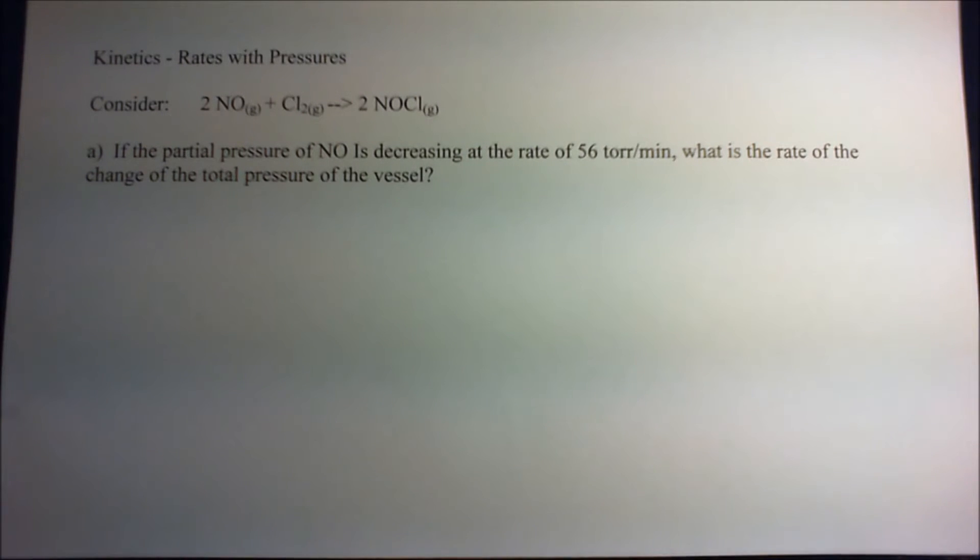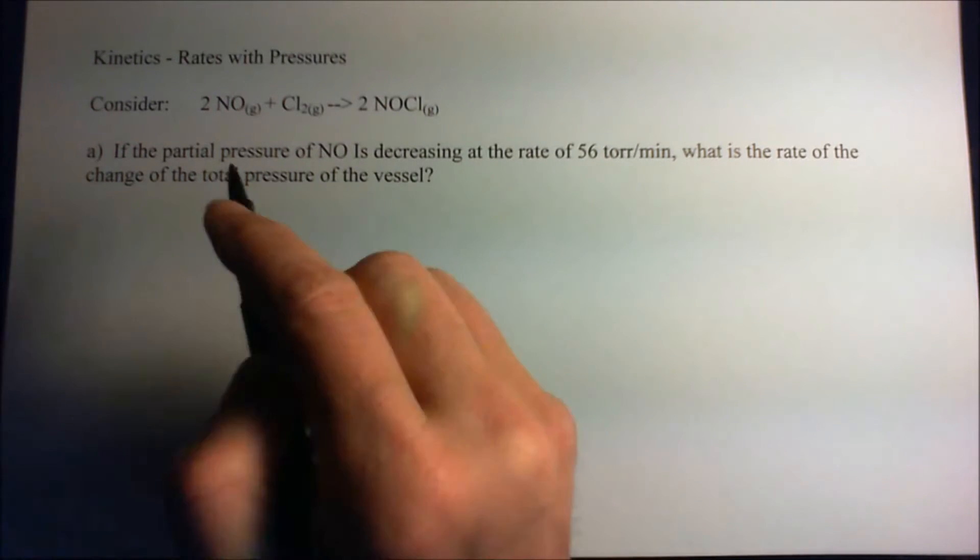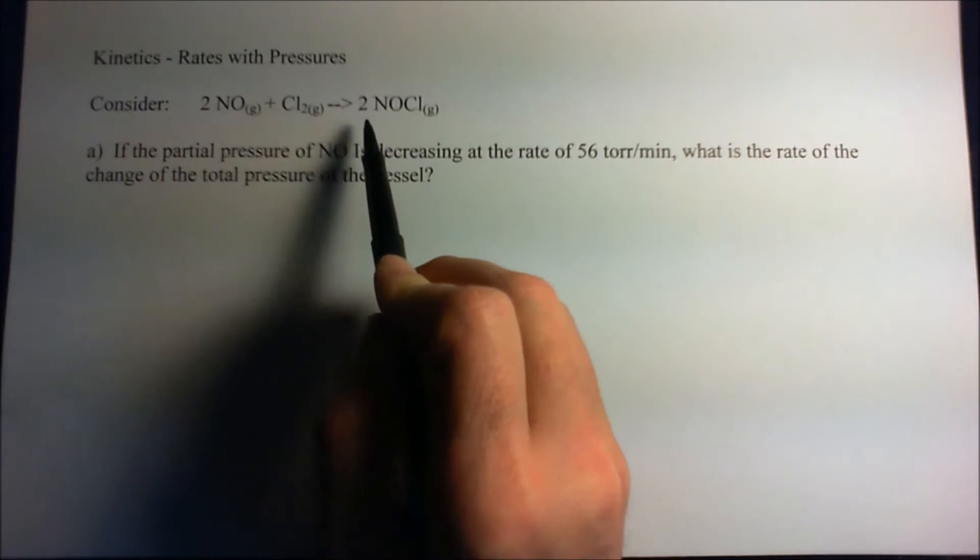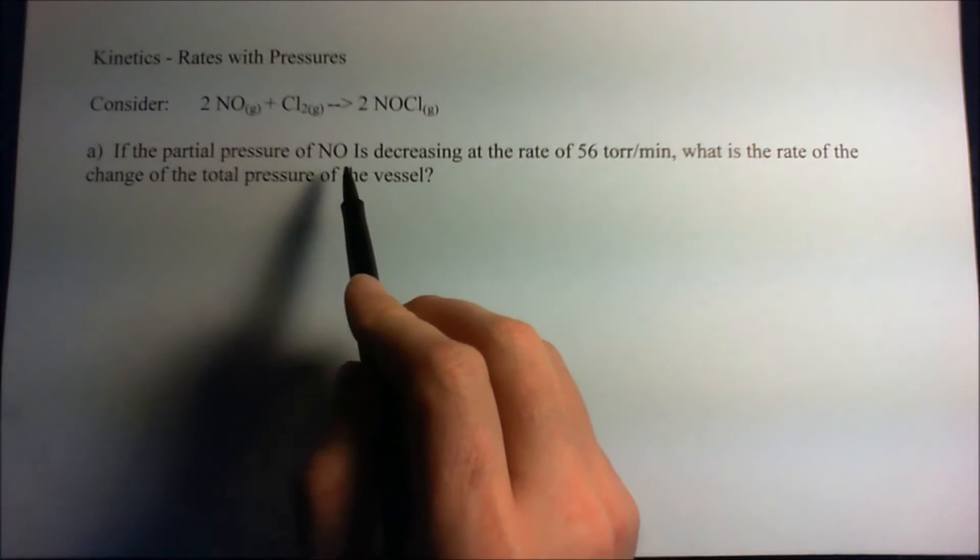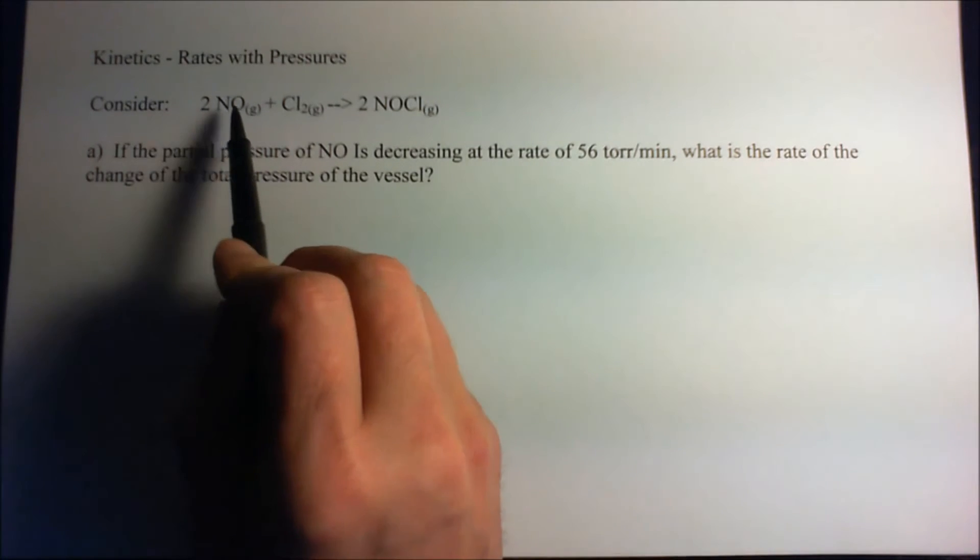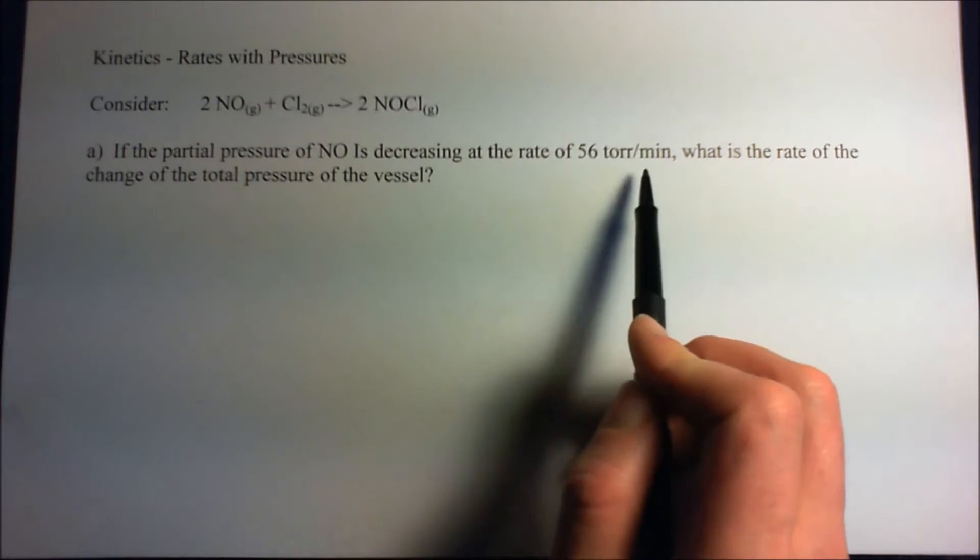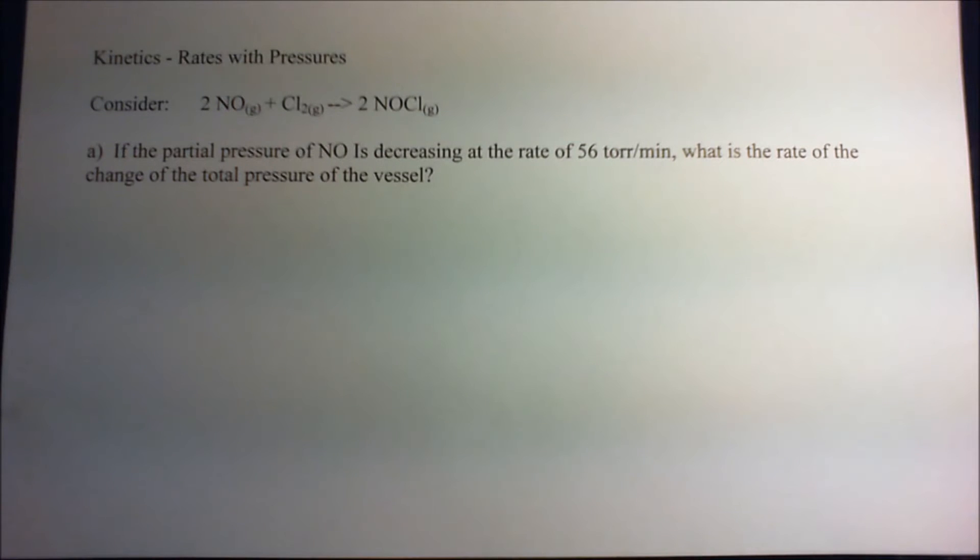Now consider what happens with kinetics when we work with pressures. Here's an example where we're interested in the change of the total pressure of the system as it goes along. We have 2 NO + Cl₂ gas gives us 2 NOCl. The partial pressure of NO is decreasing at a rate of 56 torr per minute. What's the rate of change of the total pressure of the vessel?